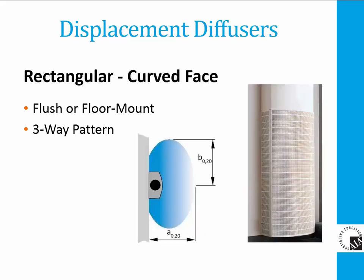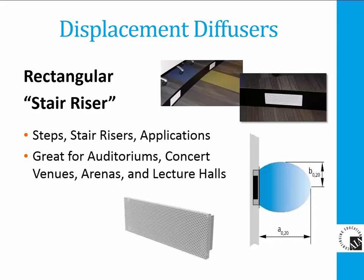Another three-way unit, similar to the last, has a rounded face for a more pleasant appearance. A rectangular stair riser unit is ideal for theaters and rooms with risers — it mounts directly into the riser and discharges comfort-conditioned air directly under the occupied seats. The stratified air will rise and carry unwanted lightweight contaminants from the space to the high-level returns.